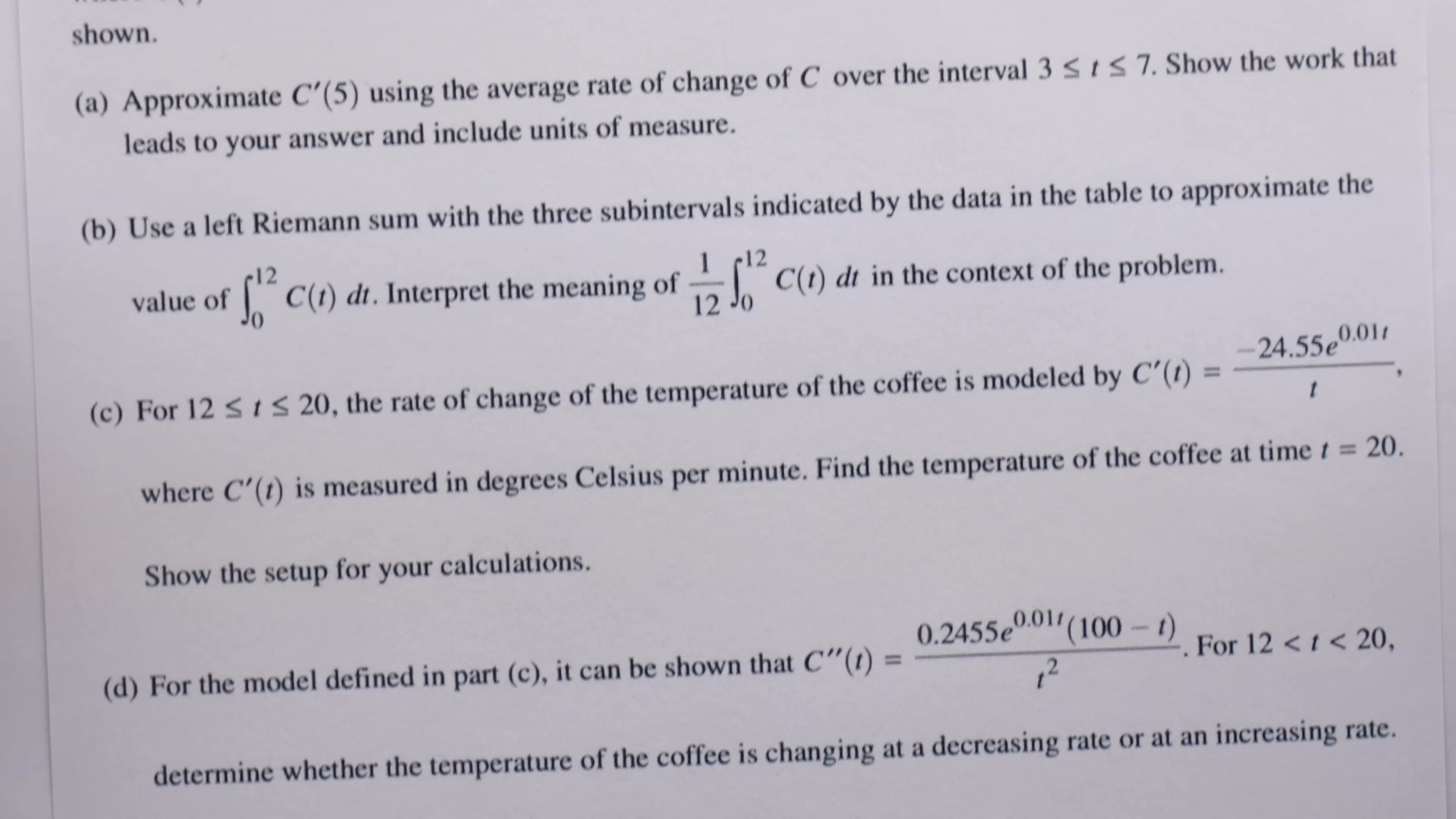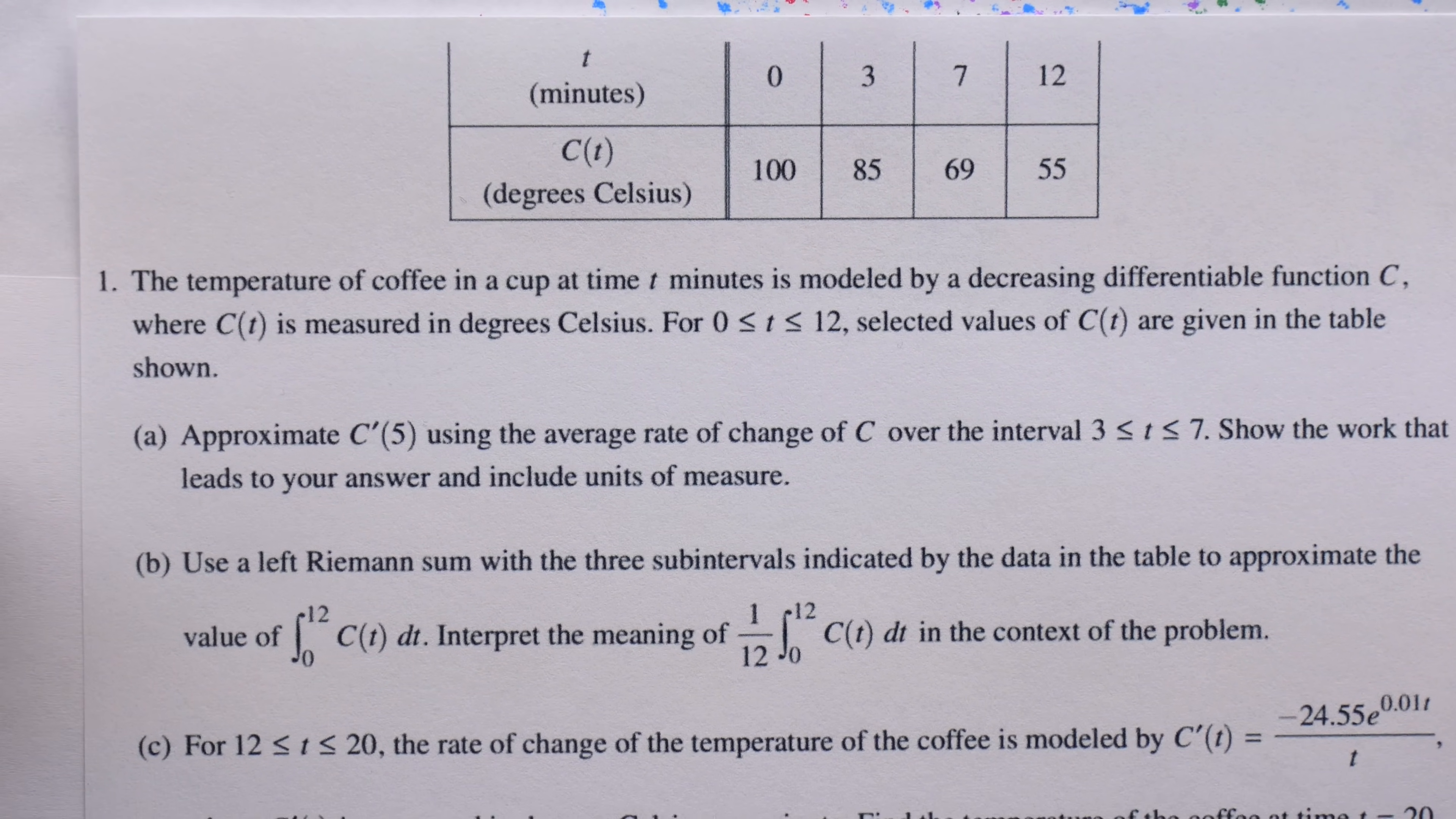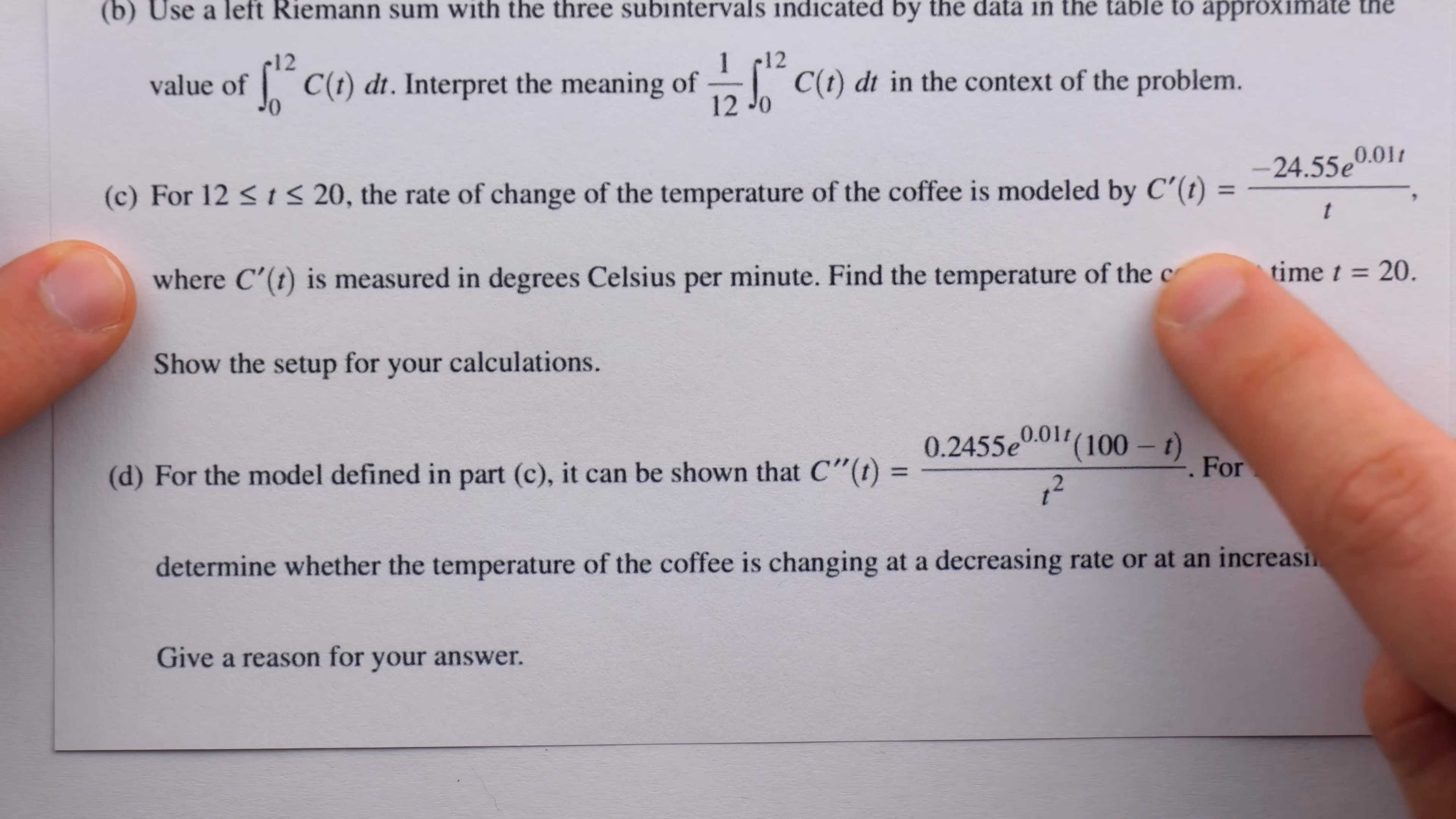The context for this problem is that it's given us some temperature readings for coffee in a cup over a handful of minutes. We can see that the temperature is decreasing. Some of the earlier parts of the problem ask us to approximate how fast the temperature is changing and to approximate what the temperature actually is at a time that's not provided, and we do an exact calculation of temperature at a given time using the derivative of the temperature function.